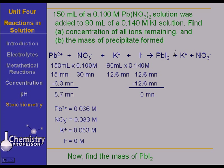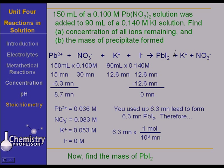Now, let's find the mass of the lead iodide, the plumbus iodide precipitate that was formed. You used up 6.3 millimoles of lead to form the precipitate. Therefore, you formed, since it's a one-to-one ratio now, of that PbI2 to Pb2+. Therefore, we must have formed 6.3 millimoles of lead iodide. 6.3 millimoles times 1 mole over 10 to the third millimoles times 461 grams per mole. Oh, I believe we produced 2.9 grams of lead iodide.